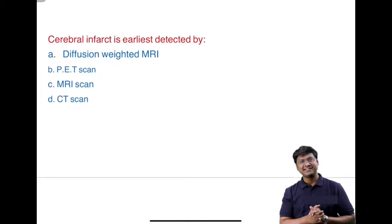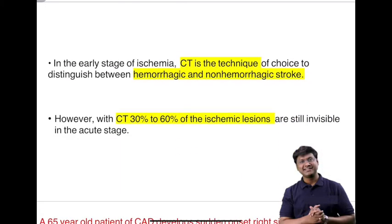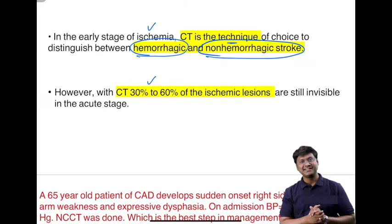Another important question: cerebral infarct is earliest detected by which modality — diffusion weighted MRI, MRA, PET, MRI scan, or CT scan? Ischemic changes are detected earliest by diffusion weighted MRI, which can detect cerebral infarct as early as 2–6 hours after onset of symptoms. CT scan is the technique of choice in early stages to distinguish hemorrhagic from non-hemorrhagic stroke; however, 30–60% of ischemic strokes are still invisible on CT in the acute stage.